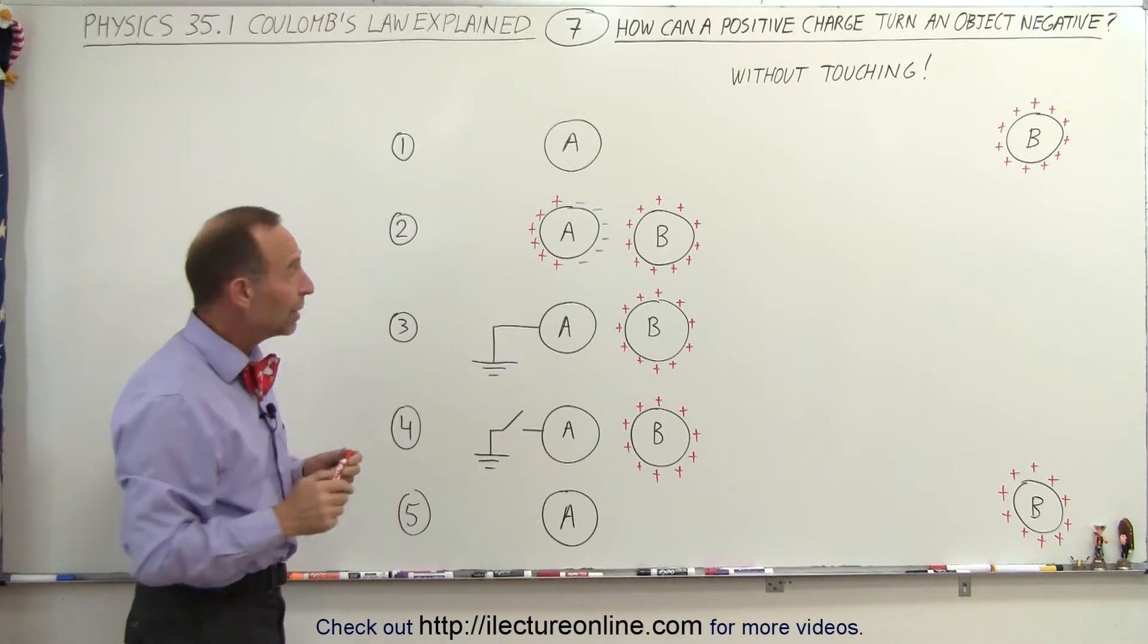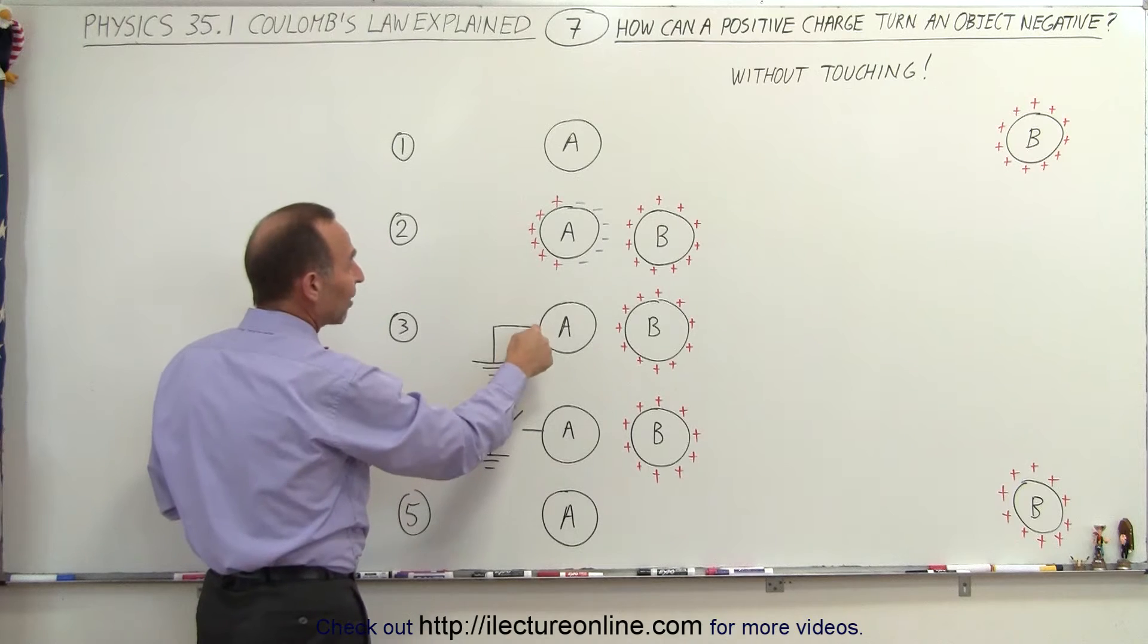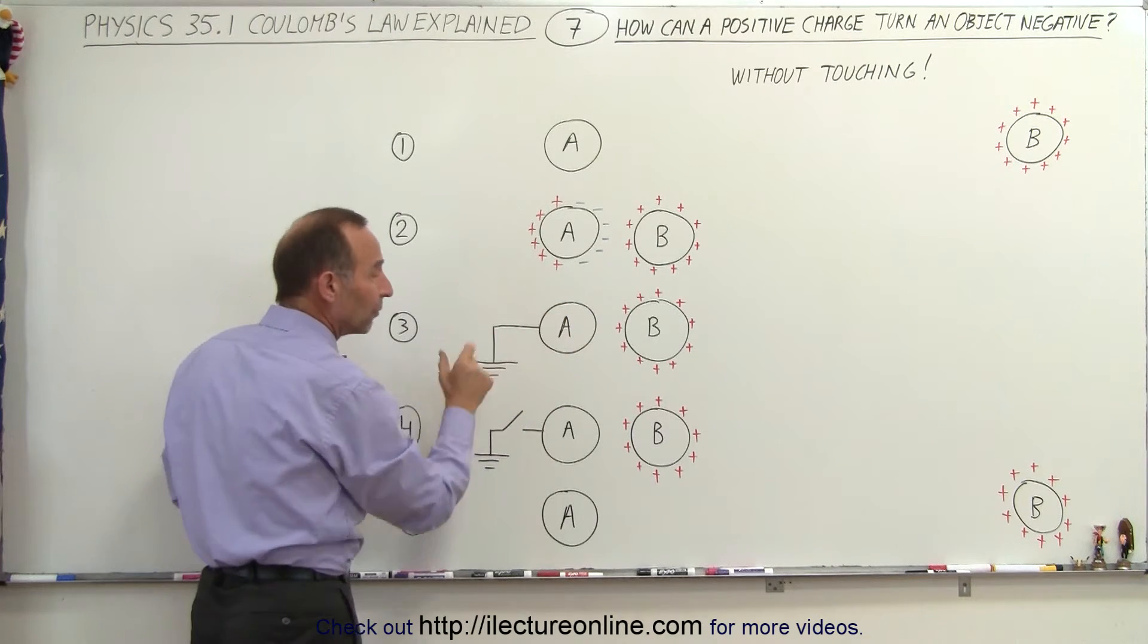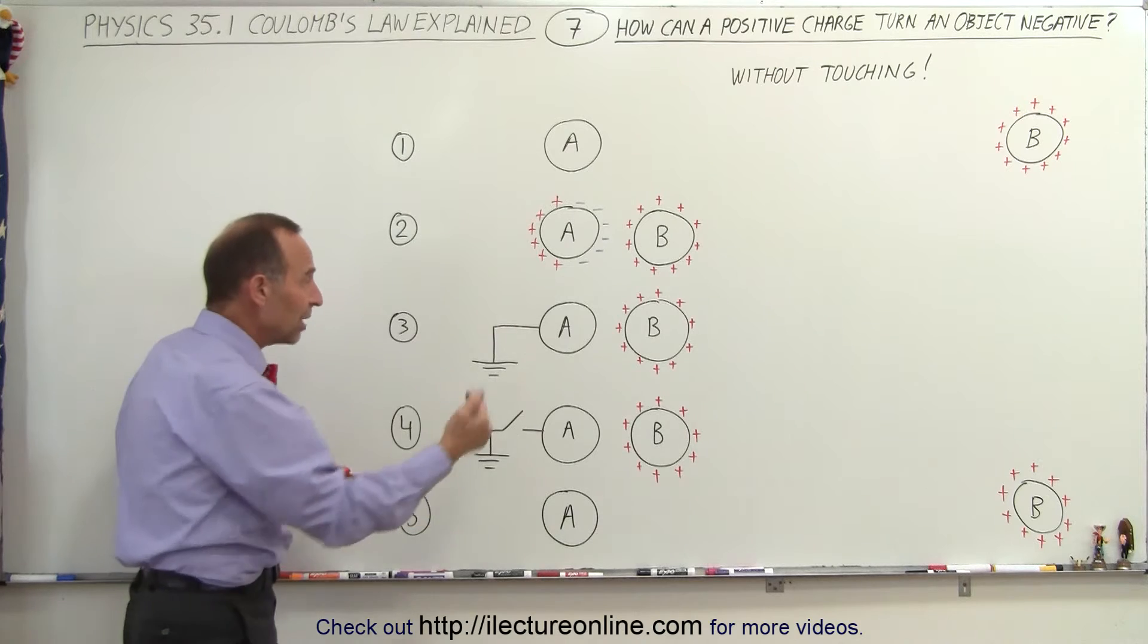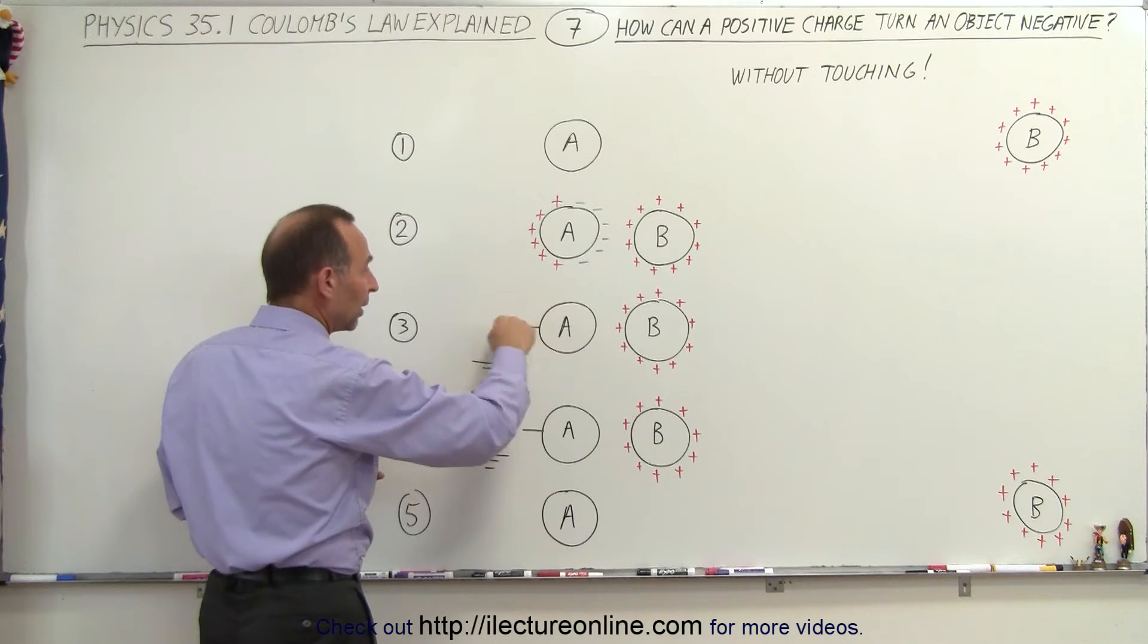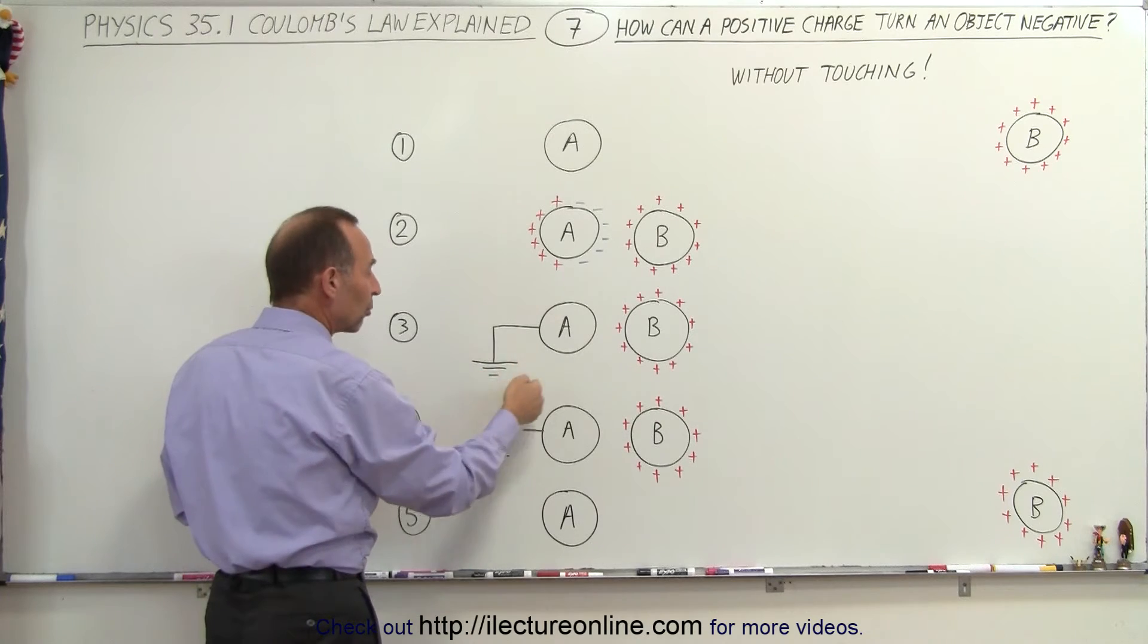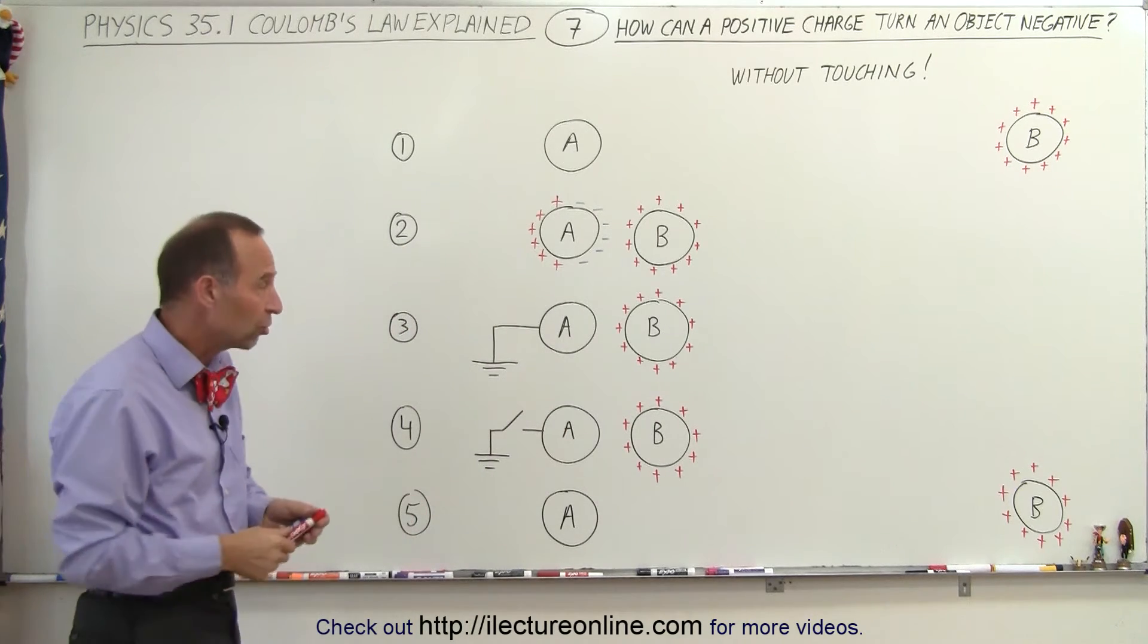Then the next step would be to connect the left side of the sphere A to ground. Now what that means is that you take a wire so that there's the ability to conduct charges across that wire, and if you stick that into a ground that has an infinite amount of positive and negative charges,